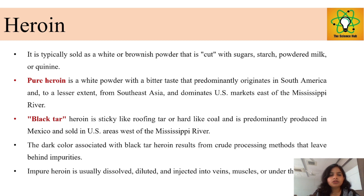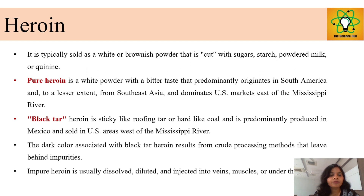Heroin is typically sold in the market as a white or brownish powder, which is cut with sugar, starch, or powdered milk. When more crude heroin is derived, it is in a black tar formation, which is an impure form. When purified and cut with sugar, starch, and powdered milk, the pure form is a white powder with a bitter taste, predominantly found in South America and marketed in the U.S.